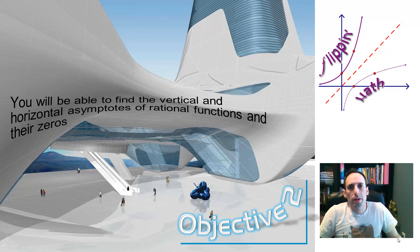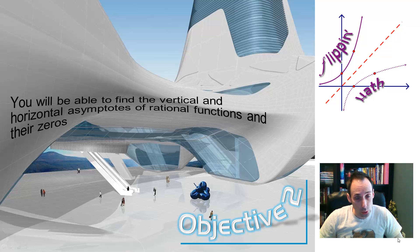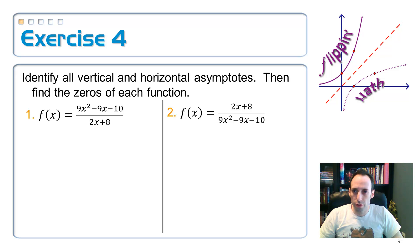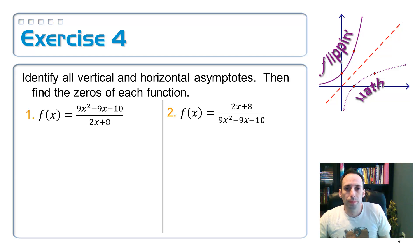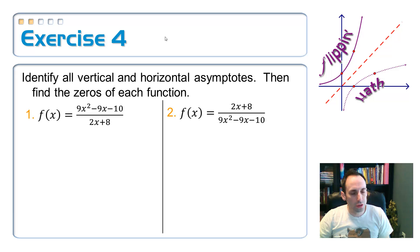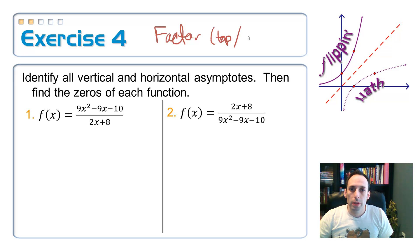We had just been talking about how to find vertical and horizontal asymptotes, so we're going to now apply that to some specific rational functions and also find their zeros. Those functions might look familiar because we've already looked at them before. The first step you always want to do is factor — factor both the top and the bottom.